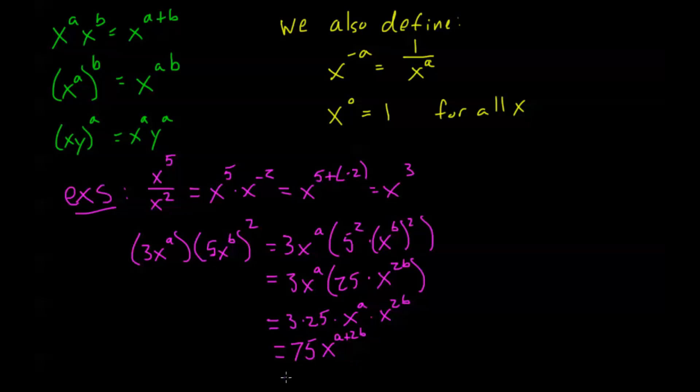3 times 25 is 75, and now I can use my first property again. x to the a times x to the 2b is x to the a plus 2b. So we've simplified it down. So there's just a couple of examples. I know this is a bit of a review, so go ahead and make sure to try some of these on your own. It's very important to be extremely comfortable with these as we make this transition to higher mathematics.